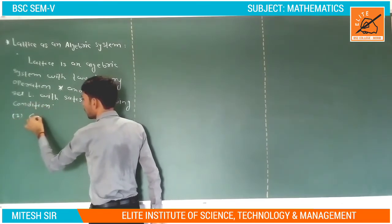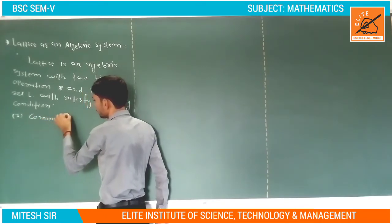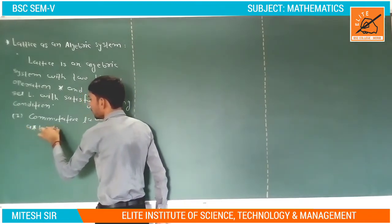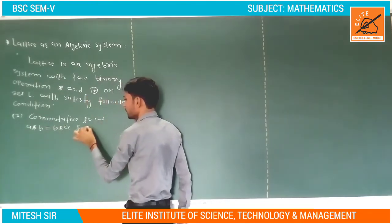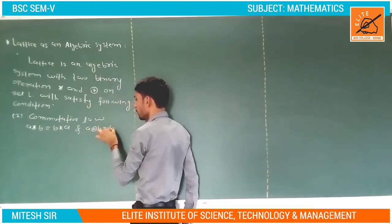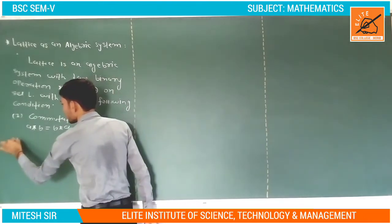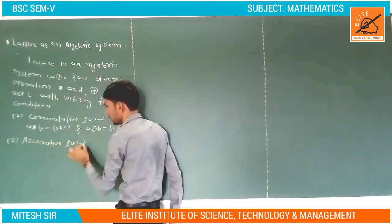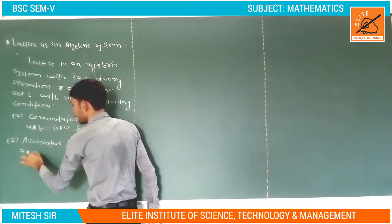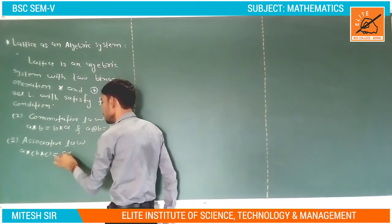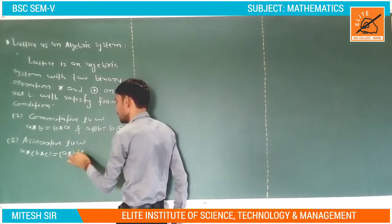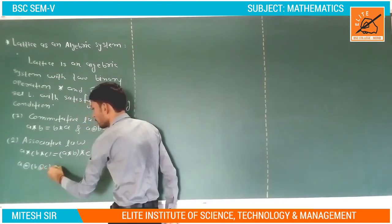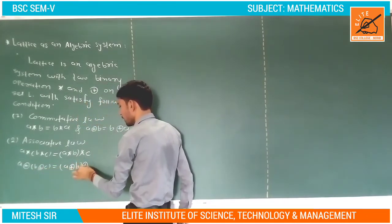The first condition is the commutative law: A star B is equal to B star A, and A ringsum B is equal to B ringsum A. The second condition is the associative law: A star (B star C) is equal to (A star B) star C, and A ringsum (B ringsum C) is equal to (A ringsum B) ringsum C.